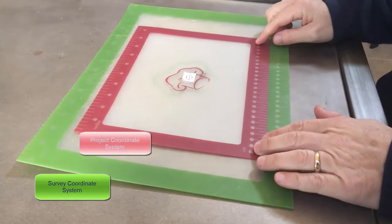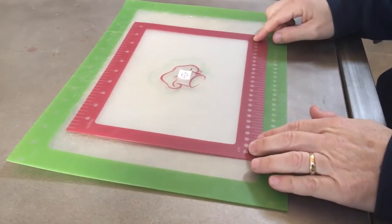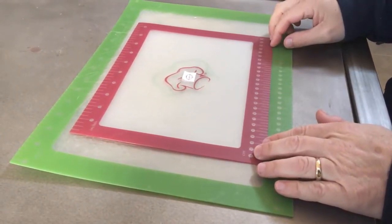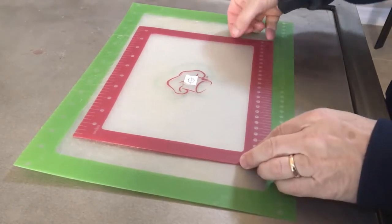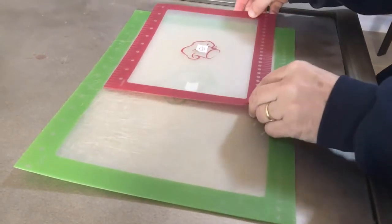Red or burgundy is the project coordinate system. When I move the project coordinate system clipped, what really happens, even though it looks like I do this,